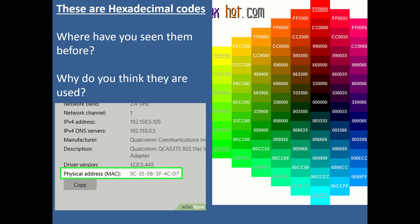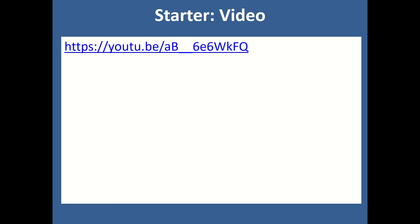Now, you might have seen hexadecimal codes before. Have a look at these two images. First of all, you've got colours. Each of the colours on the right-hand side have hexadecimal codes. On the left-hand side, you can see a MAC address. We'll be learning about MAC addresses in the networking section. These use hex codes as well. Please watch this video to give you a bit more idea about how hex codes are used.